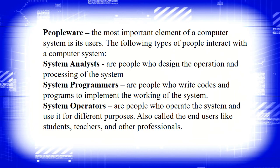Now let's talk about peopleware. The most important element of a computer system is its users. The types of people who interact with a computer system are: system analysts, who design the operation and processing of the system; system programmers, who write codes and programs to implement the working of the system; and system operators, who operate the system and use it for different purposes — also called end users like students, teachers, and other professionals.